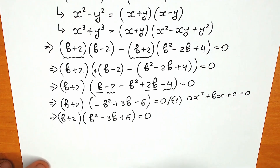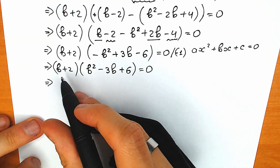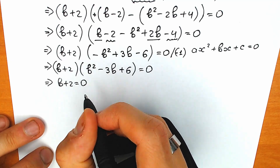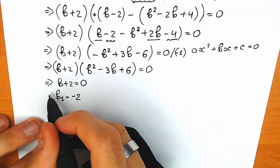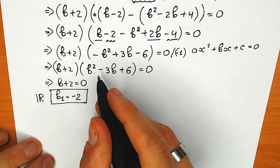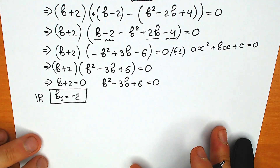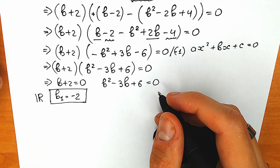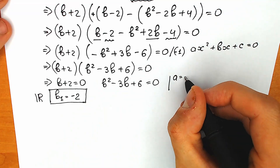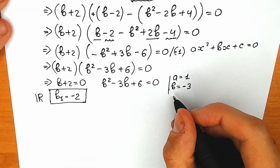We have a product of two parentheses equal to zero, so either the first or second parenthesis equals zero. Starting with the first: b + 2 = 0, so b₁ = -2. This is our real number root. For the second parenthesis: b² - 3b + 6 = 0. Using coefficients: a = 1, b = -3, and c = 6.